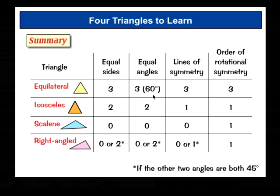Here's a nice summary table for you. It's pretty straightforward, except for the right angle bit down here, which looks a bit confusing. Don't be worried. It just means that for a right-angled triangle, if the other two angles are both 45 degrees, it has the same number of equal sides, equal angles, and lines of symmetry as an isosceles triangle. See you?